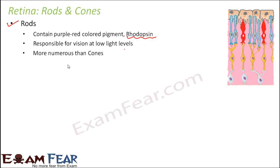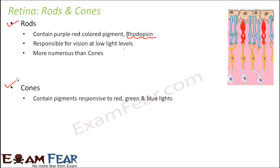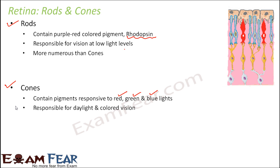Rods are more numerous than cones. Cones contain a different pigment which is responsive to red, green, and blue light, so they can sense colorful lights. That is why cones help in daylight vision and colored vision — they help distinguish colors. In the diagram, the blue cells are rods and the red ones are cones, and you can see rods are quite more numerous than cones.